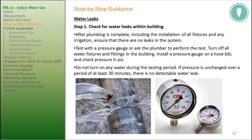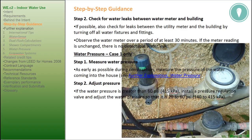Water leaks, Step 1: check for water leaks within the building after plumbing is complete, including the installation of all fixtures and any irrigation. Ensure that there are no leaks in the system. Test with a pressure gauge or ask the plumber to perform the test. Turn off all water fixtures and fittings in the building, install a pressure gauge on a hose bib, and check pressure inside. Do not turn on any water during the testing period. If pressure is unchanged over a period of at least 30 minutes, there is no detectable water leak.